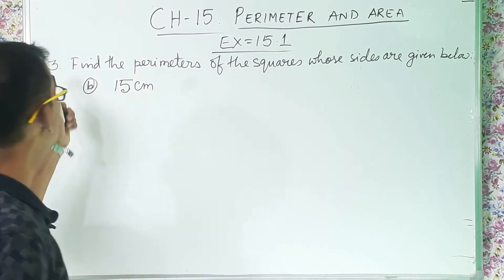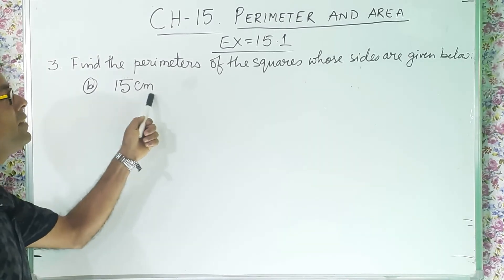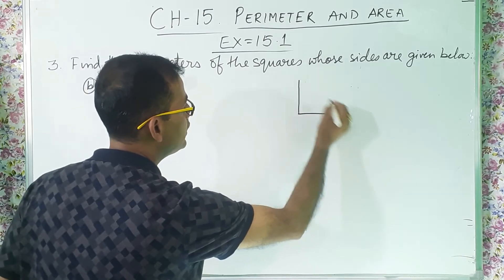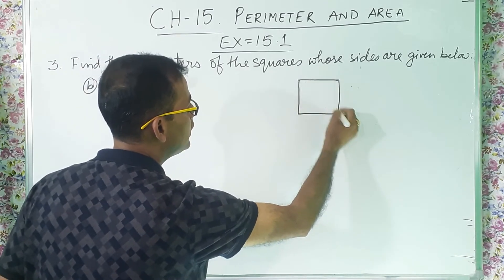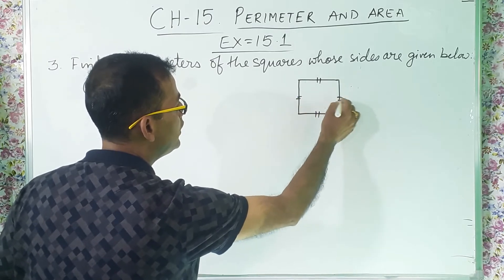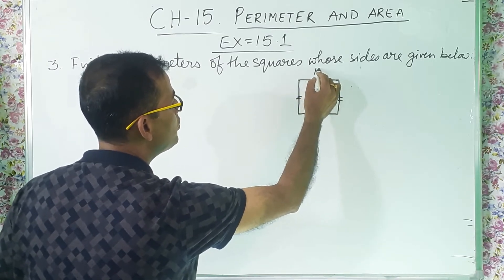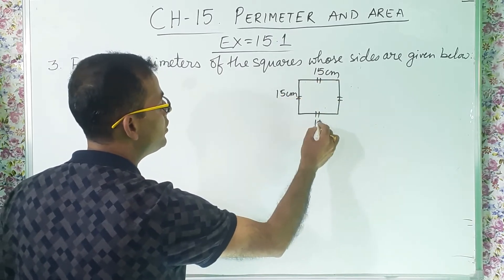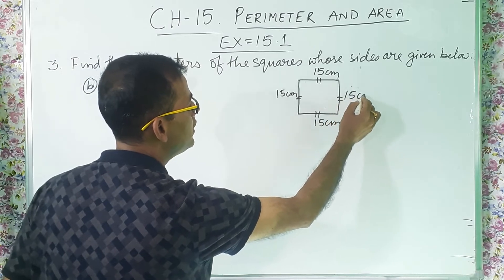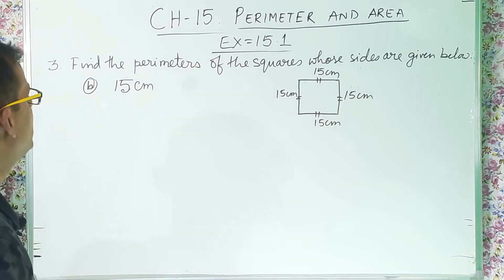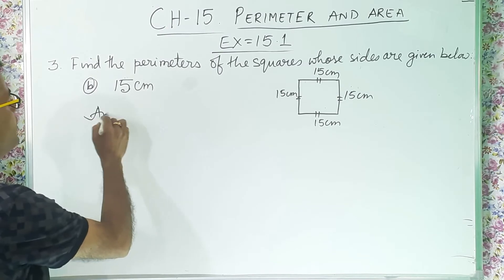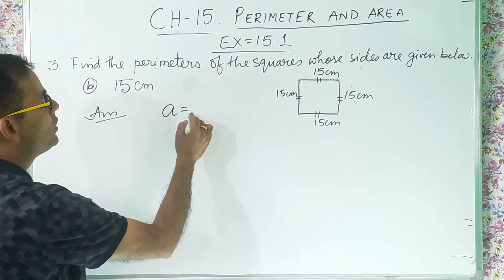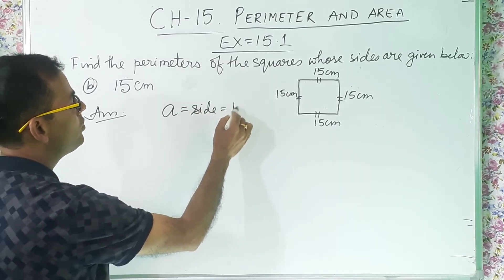Now question number 3B: 15 cm. Same way, I will draw one square and all the sides of the square are equal — 15 cm, 15 cm, 15 cm, 15 cm. I will write: side A is equal to 15 cm.